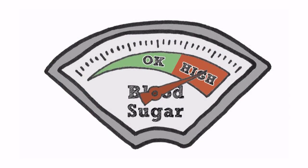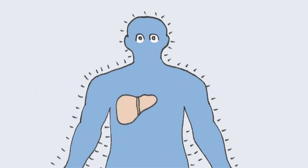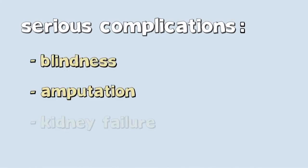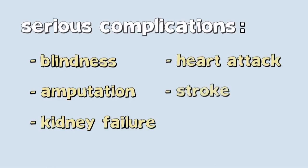Most importantly, over time, exposure to high blood sugar levels can cause damage to vital organs connected to the bloodstream, such as your eyes, kidneys, nerves, and heart. If not controlled properly, diabetes can lead to serious complications, such as blindness, amputation, kidney failure, heart attack, and stroke.